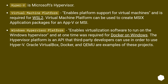Windows Hypervisor Platform enables virtualization software to run on the Windows Hypervisor and at one time was required for Docker on Windows. The Hypervisor Platform is an API that third-party developers can use in order to use Hyper-V. Oracle VirtualBox, Docker, and QEMU are examples of these projects.